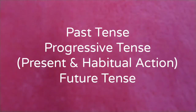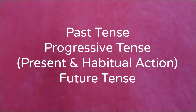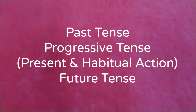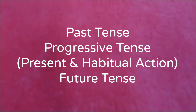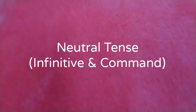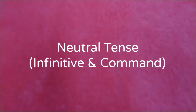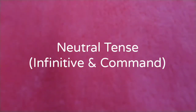Pikal has three tenses: a past tense, a progressive tense which can show both present and habitual action, and a future tense. It also has what might be called a neutral tense, which indicates both the infinitive tense and a command.